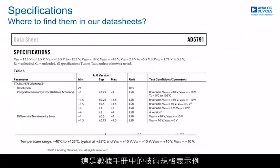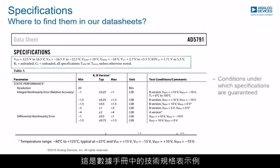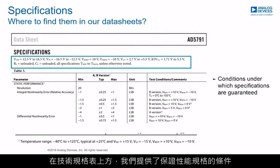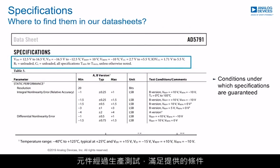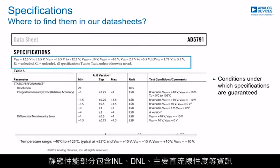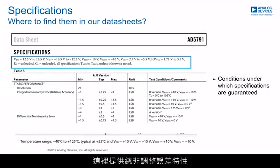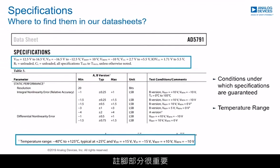Here is an example of the specifications table contained in the datasheet. Above the table, the conditions under which specifications are guaranteed are stated. Parts are tested through production to meet the quoted conditions — supply ranges and load conditions are typically quoted in this area. The static performance section contains information such as INL, DNL, and main DC linearity specifications, including total and adjusted error. The footnotes section is important to read, as it often indicates the temperature range of the device.